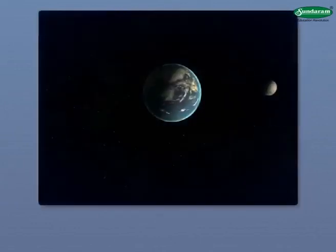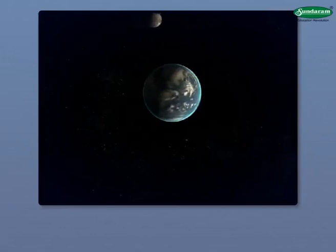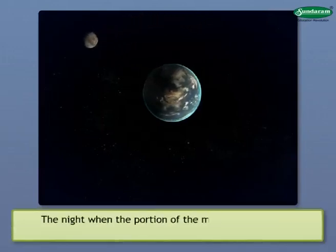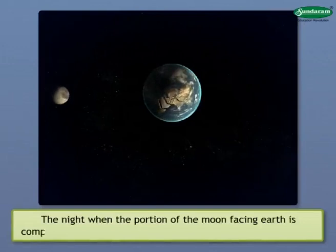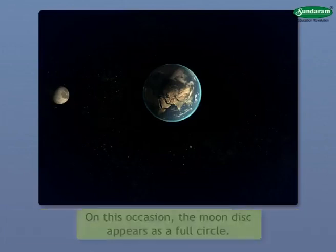This visible part of the illuminated portion keeps increasing or decreasing. The night when the portion of the Moon facing Earth is completely illuminated, it is called Full Moon Night or Purnima. On this occasion, the Moon disk appears as a full circle.